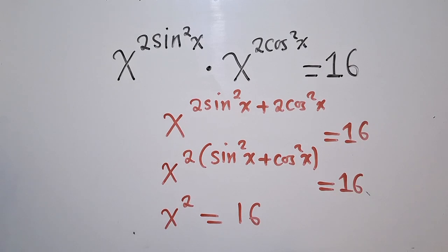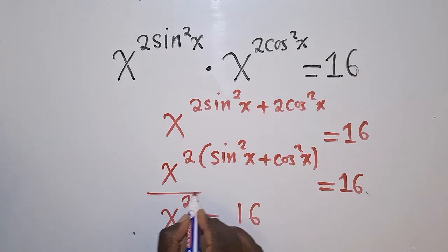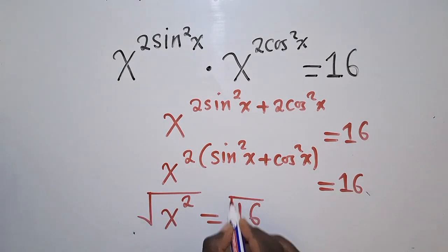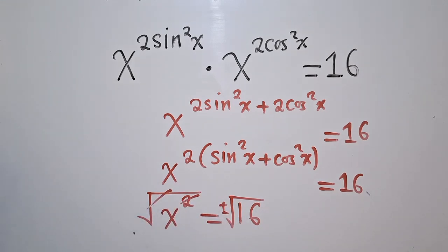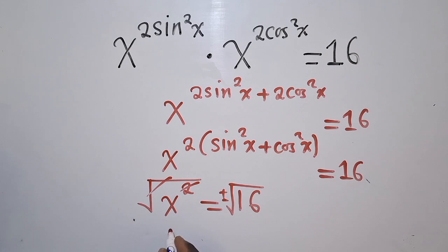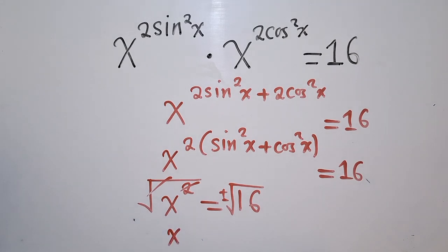What is X power 2 is equal to 16? We shall square root both sides. The power here and the root will go. Therefore, we shall remain with X is equal to 4 or negative 4.